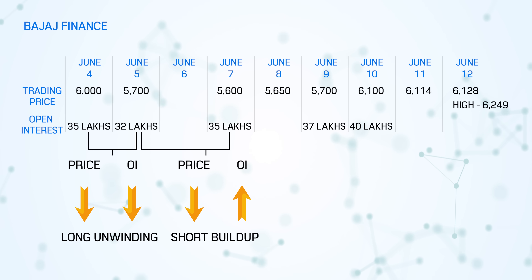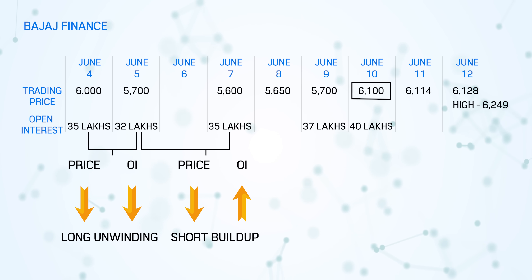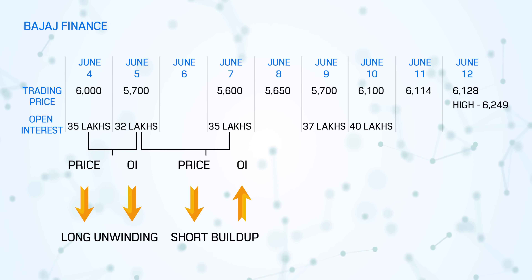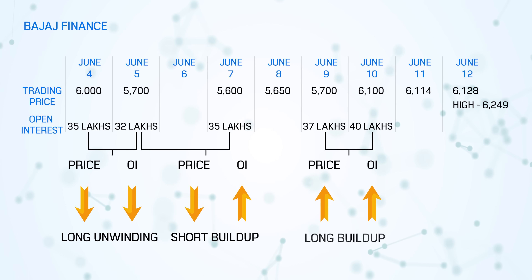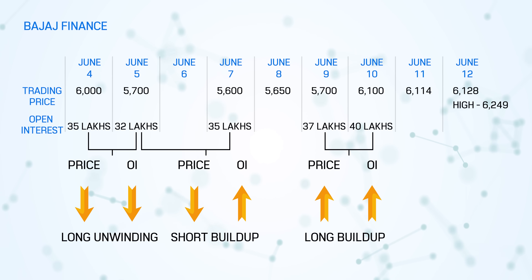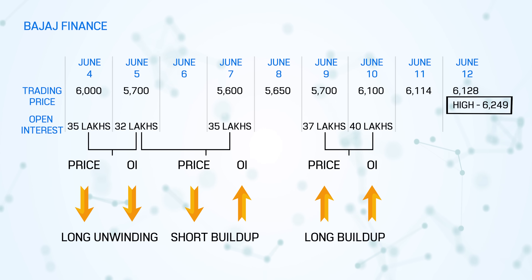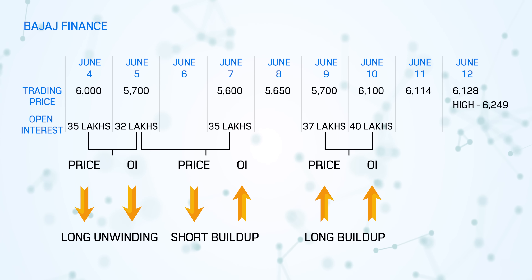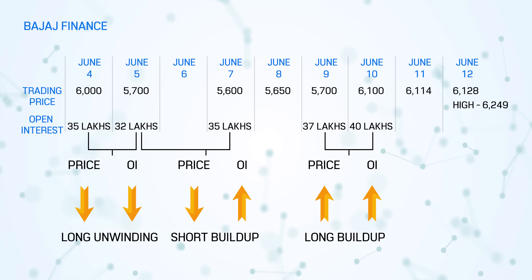On the higher side — on 9th of June it was at 5,700, and on 10th of June it shot up to 6,100, almost 7-8% higher. That day, open interest increased from 31 lakh to 40 lakh. When the price goes up and open interest also goes up, that means it's a long buildup — the price is likely to continue higher. And that's what happened: from 6,114 it went up to 6,128, and intraday it went up to 6,249. But when the price goes up and open interest comes down, that means it's short unwinding.